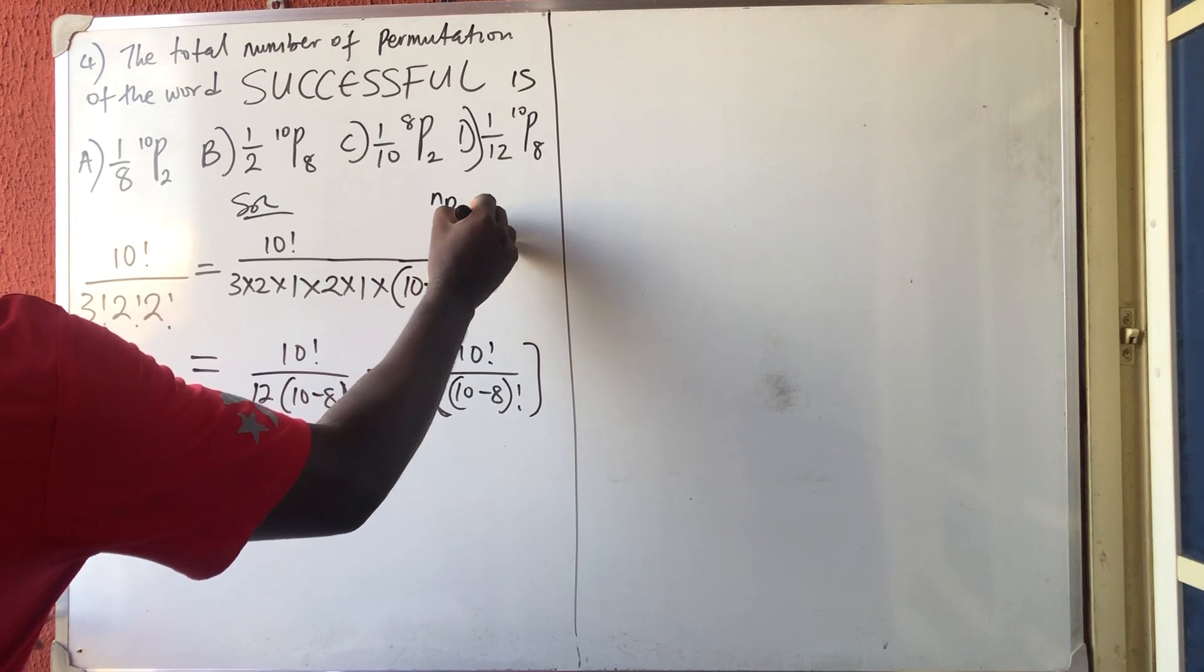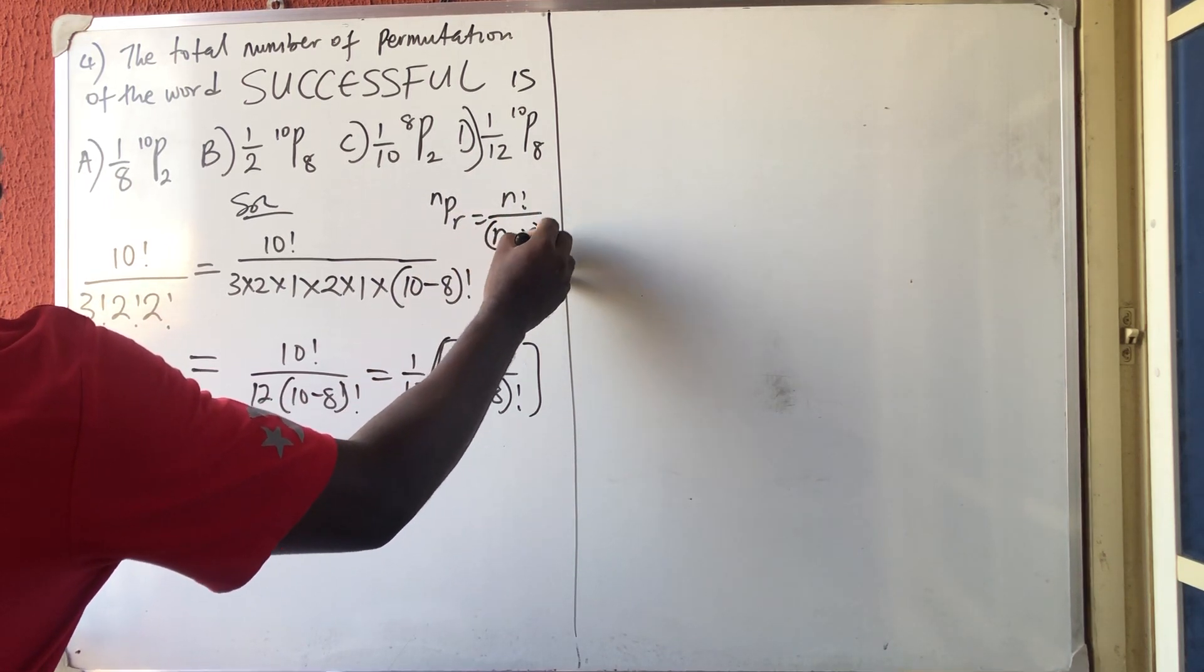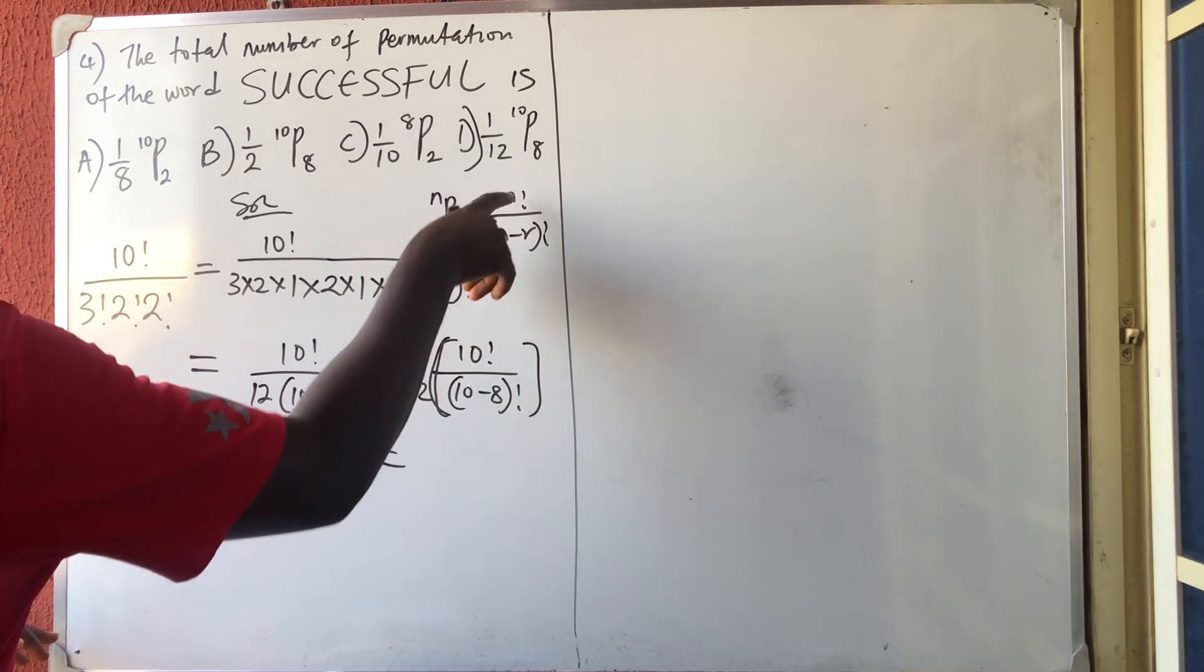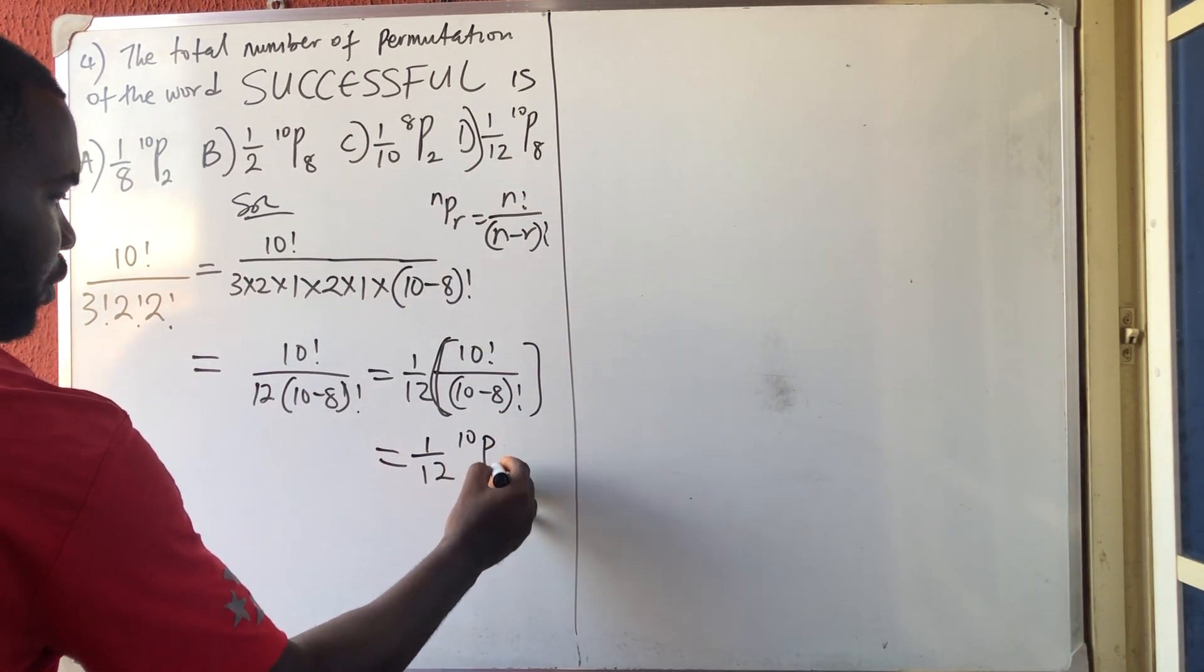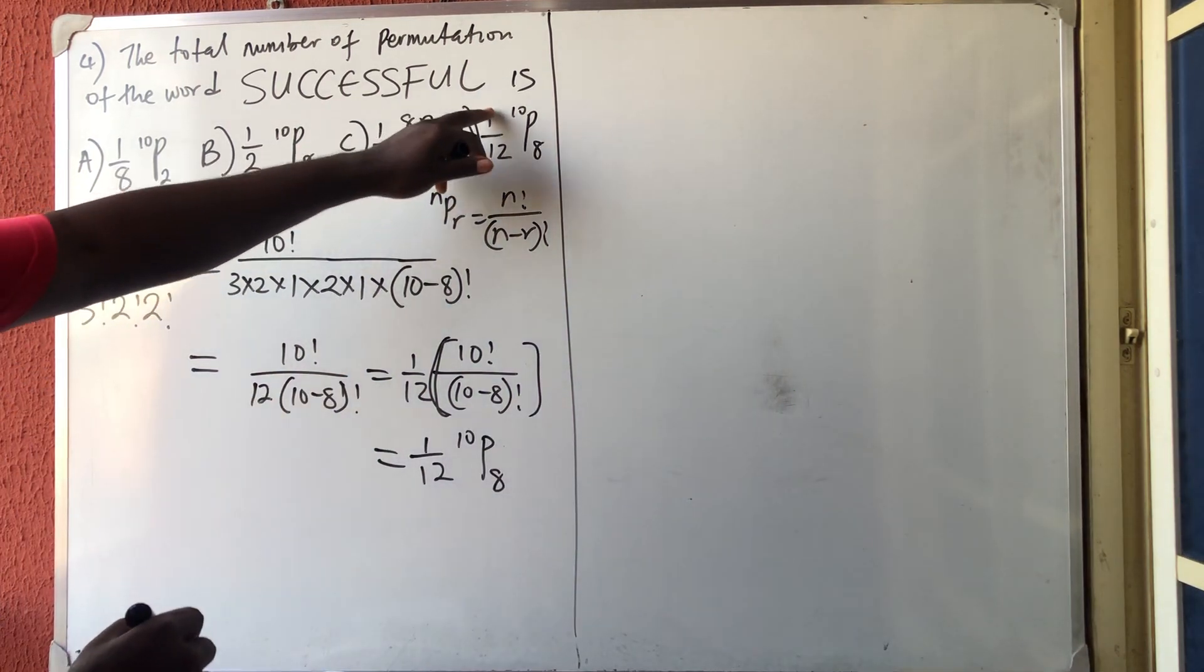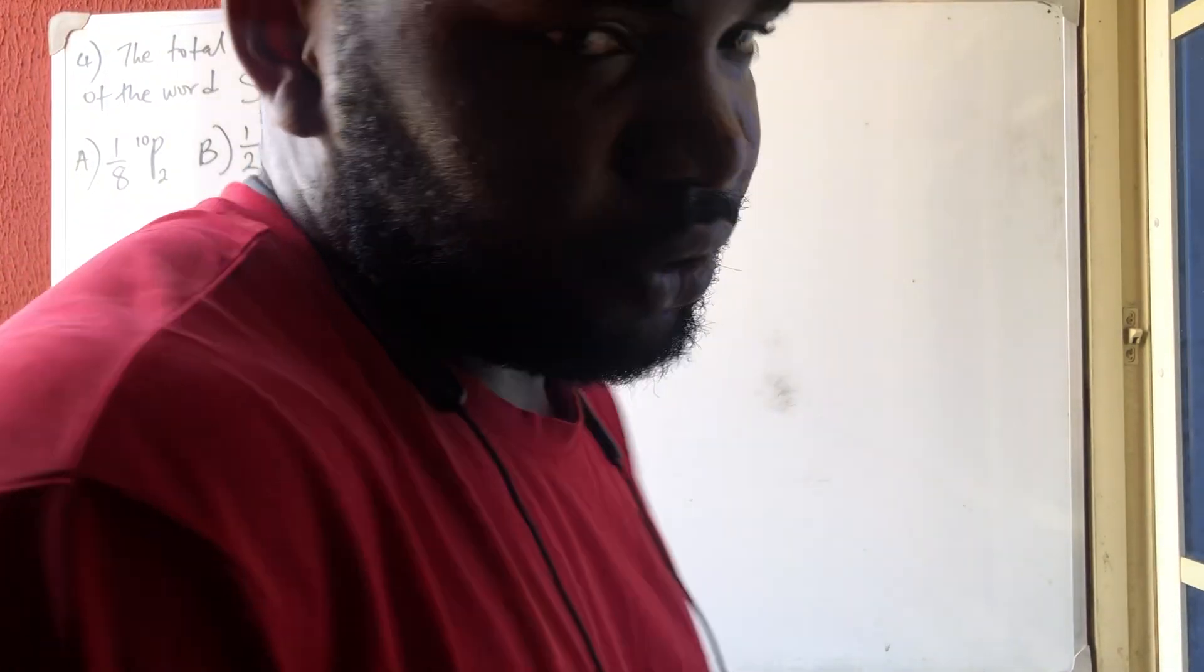Okay, if you look at this now, do you know that n permutation r means n factorial all over n minus r factorial? So if you compare this to this, you are going to see that I'm going to have 1 over 12, 10 permutation 8. 1 over 12, 10 permutation 8. So G is the answer. So thank you very much for watching, please subscribe.